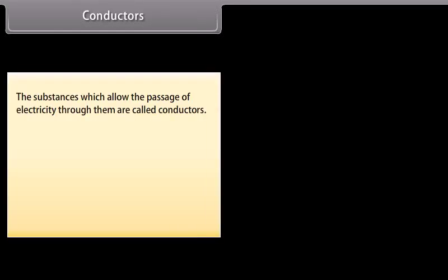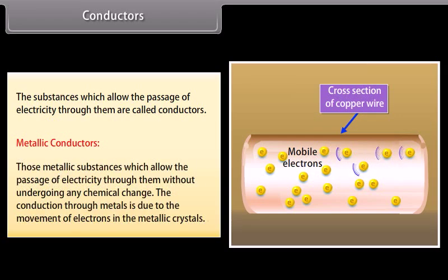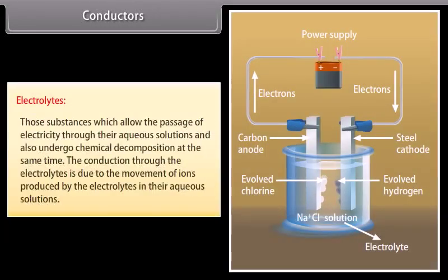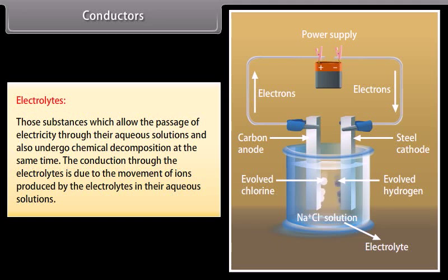Conductors: Substances which allow the passage of electricity through them are called conductors, classified into two categories — metallic conductors and electrolytes. Metallic conductors are metallic substances which allow the passage of electricity without undergoing any chemical change; conduction is due to the movement of electrons in metallic crystals, for example copper and silver. Electrolytes are substances which allow the passage of electricity through their aqueous solutions and also undergo chemical decomposition; conduction is due to the movement of ions produced in aqueous solution, for example acids and bases.